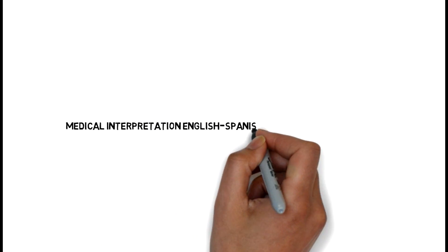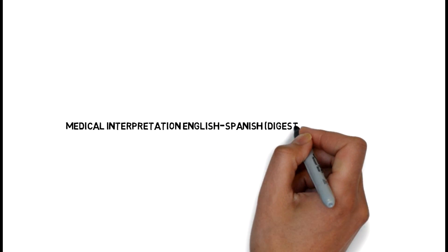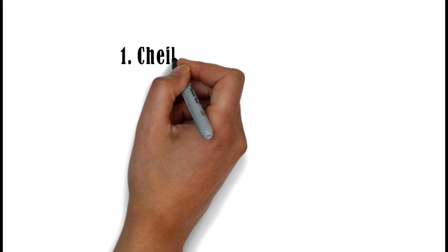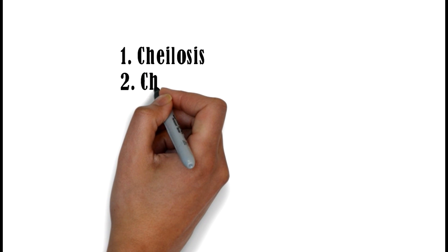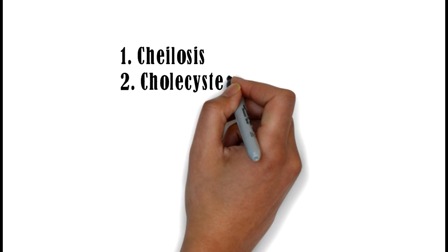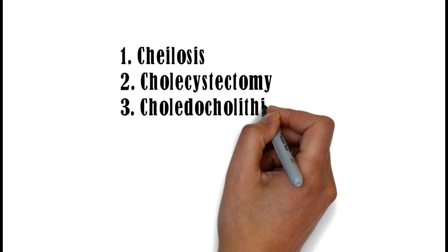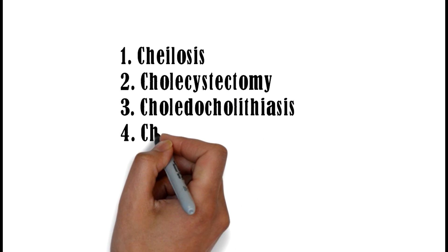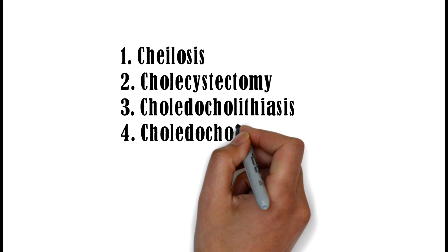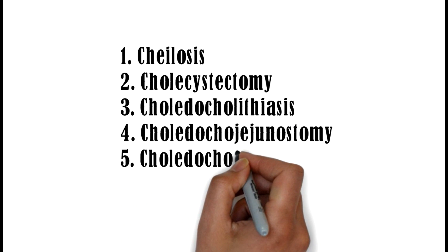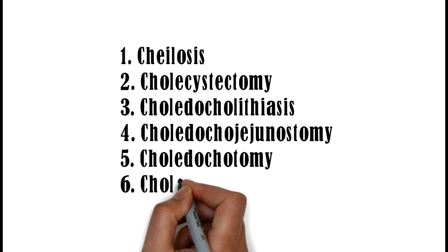Today I will discuss six words related to the digestive system. I will give their definition in English as well as in Spanish. The six words are: 1. Chelosis, 2. Cholecystectomy, 3. Choledocholithiasis, 4. Choledochojejunostomy, 5. Choledochotomy, 6. Chololithiasis.